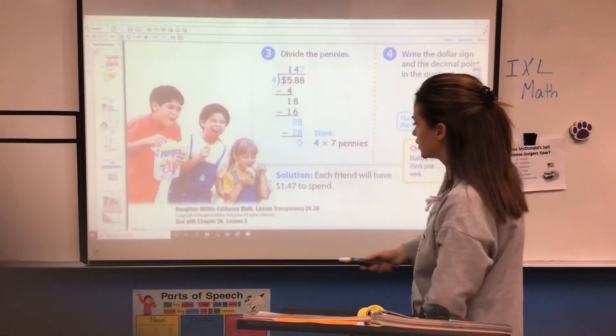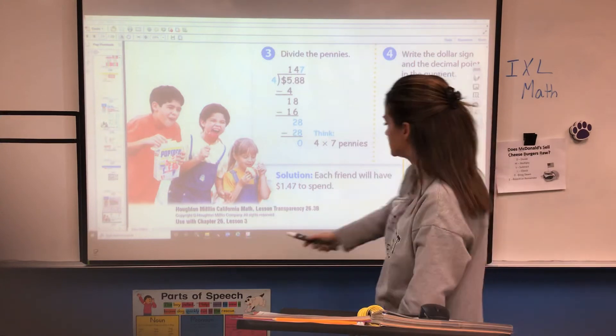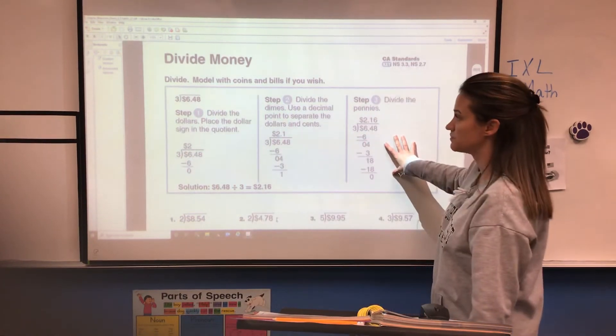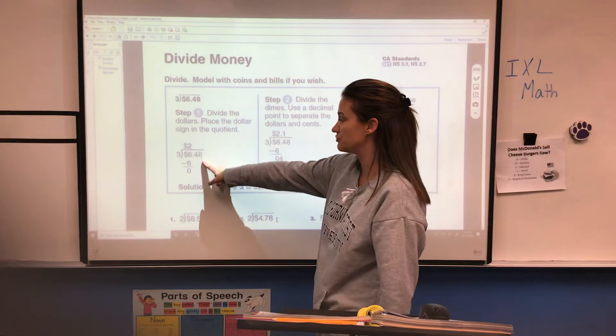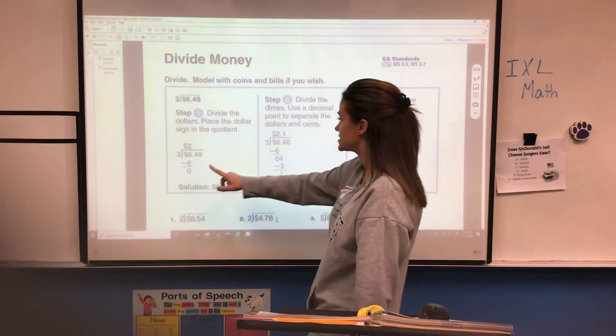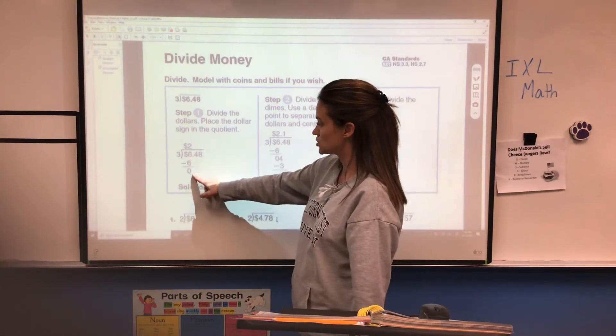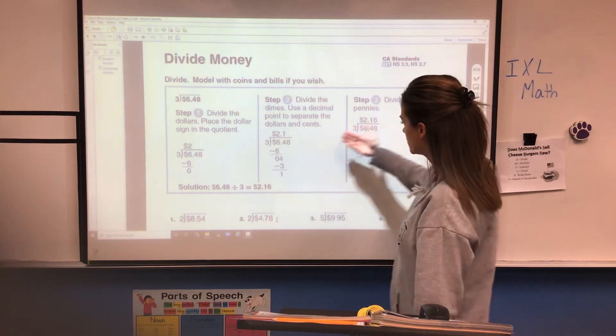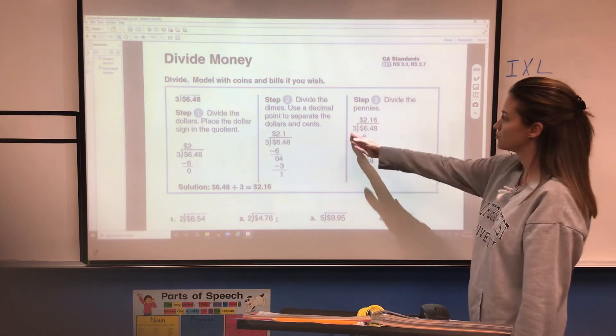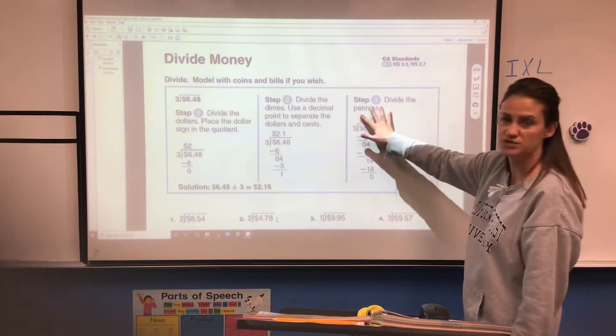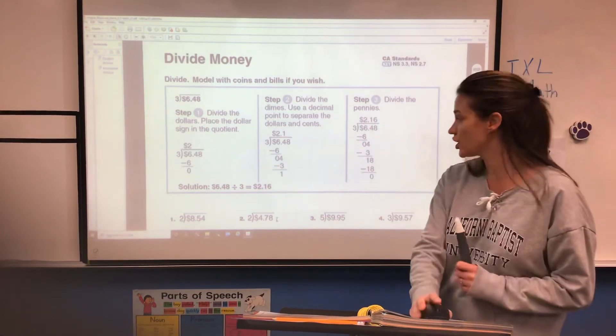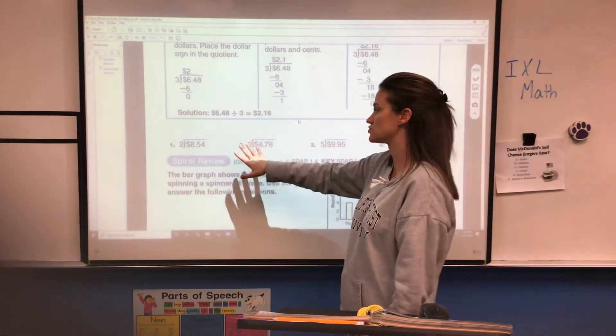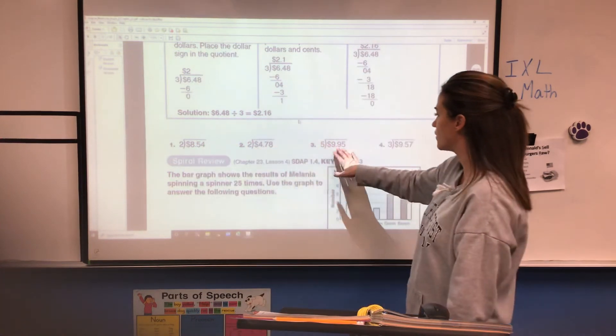We're going to look at your math work for today. Your paper should look like this. I love that they gave you the model of the example up top. They divided three into $6.48. They went through the division steps one at a time. First, three goes into six two times and subtracted. They brought down the four. Three goes into four one time. They had one left over and now they're going to bring down the eight and they have 18. Three can go into 18 six times and they got an answer of $2.16. You're going to work four money division problems today. I'm not going to work any of those for you. I did the guided practice with you. I want you to go ahead and work those four problems.